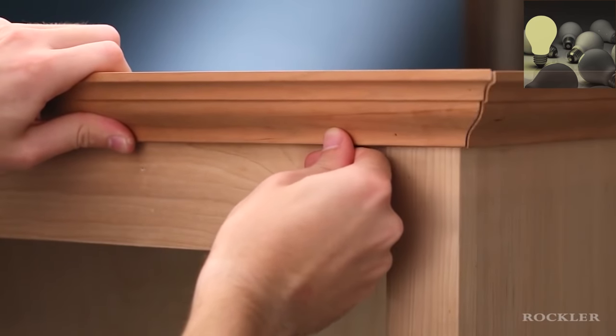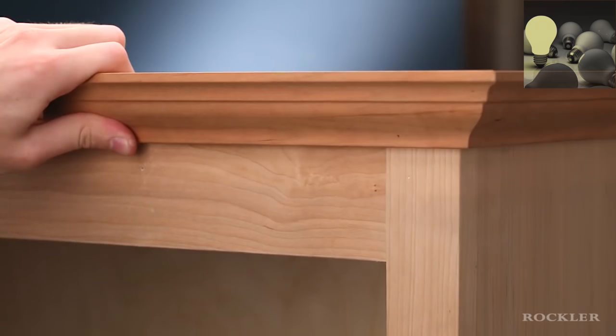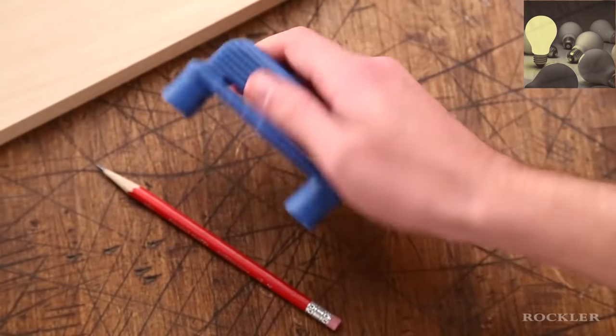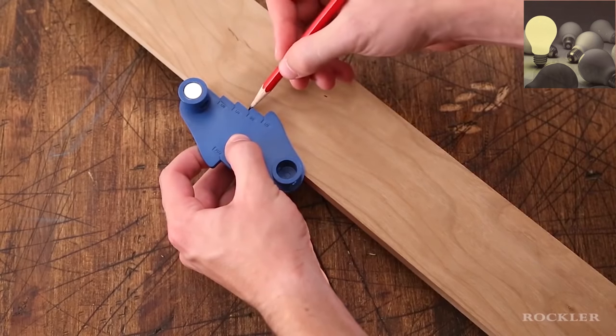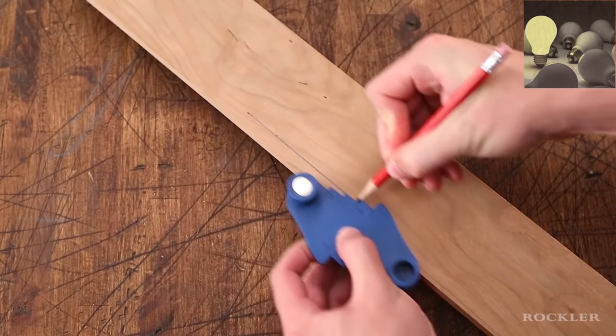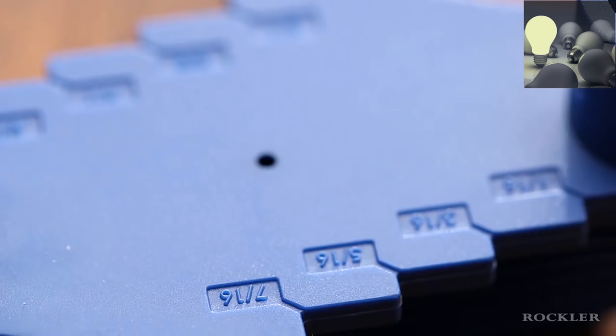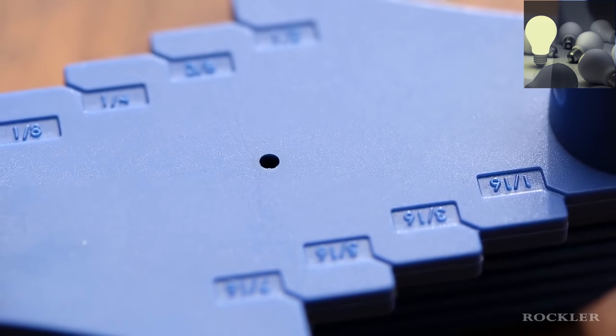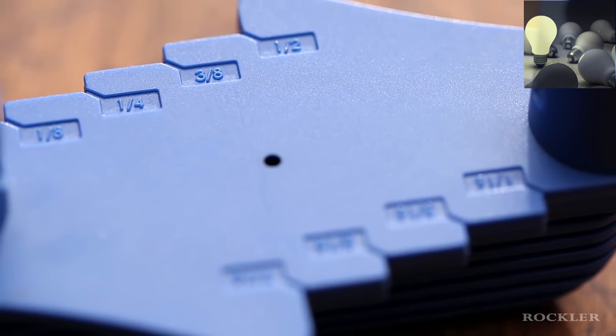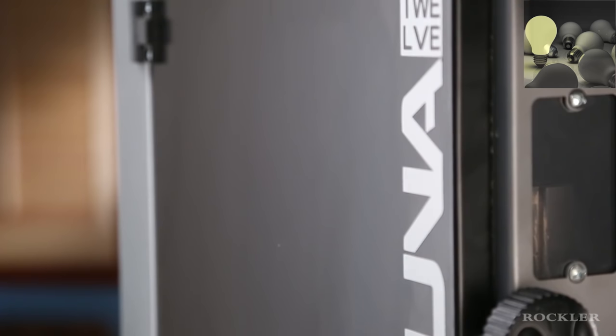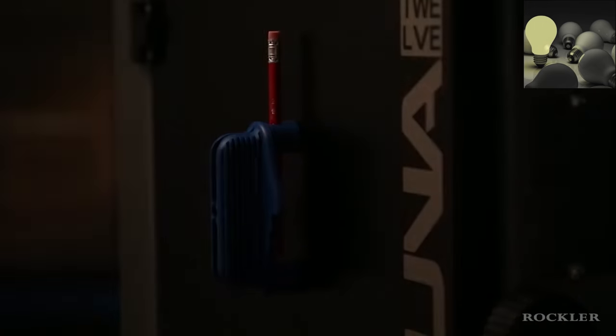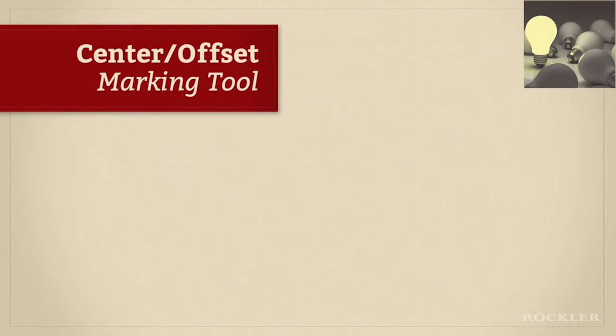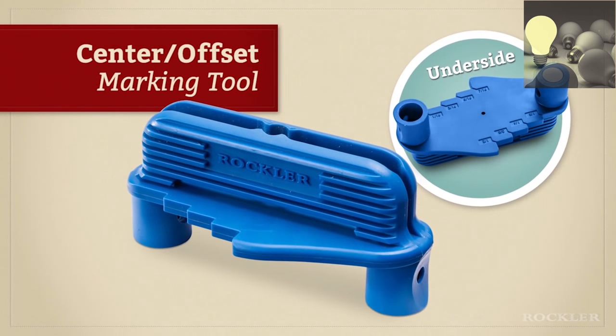The second job is marking offsets or reveals for jobs like installing moldings. Just flip the tool, butt it against the board, choose the offset, and slide the tool to draw the line. It marks offsets from 1/16th to 1 1/2 inch from the edge in 1/16th increments. When you're done, you can take advantage of the built-in magnet to store it on a metal surface for easy retrieval next time. The Center Offset Marking Tool, another Rockler innovation to help you create with confidence.